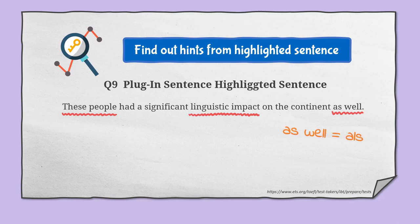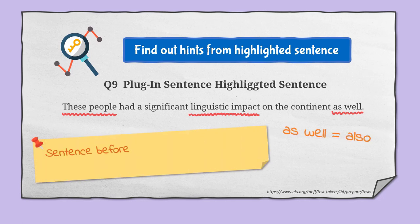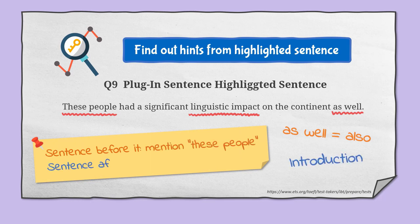'As well' means 'also' — this indicates the sentence before it must mention these people, and it looks like an introduction. The sentence after it may explain more about linguistic impact.